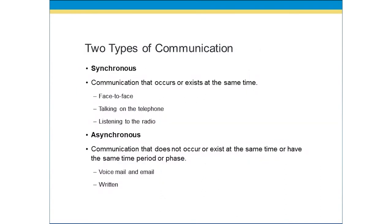There are two types of communication, and we engage in them on a daily basis — definitely something you would engage in in the workplace. The first is synchronous communication. This is communication that occurs or exists at the same time. Face-to-face communication, talking on the telephone, or even listening to a talk radio show — that's synchronous communication. If we are face-to-face and we're communicating, we're in the same time period and we're having dialogue back and forth.